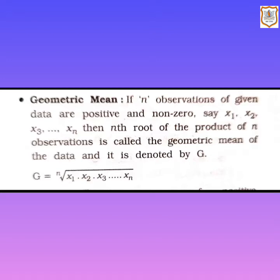If the observations of given data are positive and non-zero, let them be x1, x2, x3 up to xn. Then the nth root of the product of n observations is called the geometric mean of the data, and it is denoted by G. The formula for geometric mean is: nth root of x1 multiplied by x2, x3, up to xn.